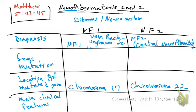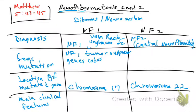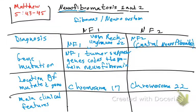In neurofibromatosis type 1, the NF1 tumor suppressor gene codes for the protein neurofibromin. I'll underline that — it's important to distinguish between type 1 and type 2.